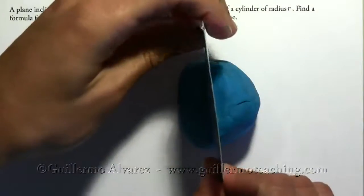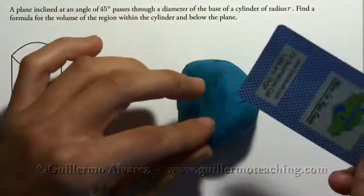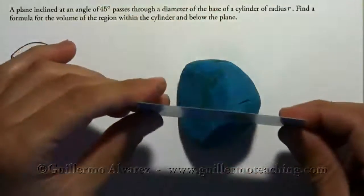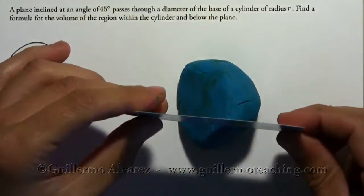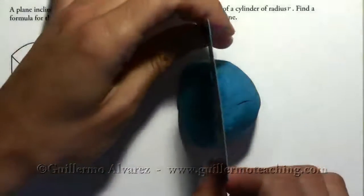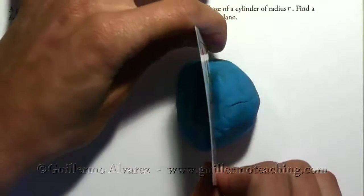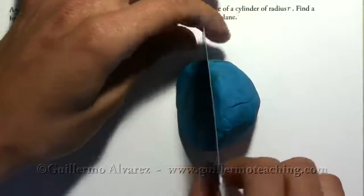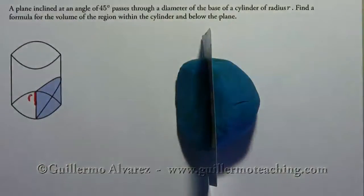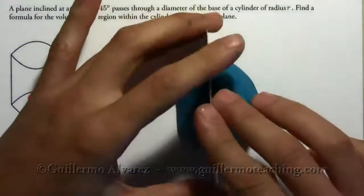So we're going to take a cross-section. Actually, there's two ways to do this one, but we're going to take, you can take a cross-section like this, which would give you triangles, but we're going to, I'm going to do this one. Later on, if you feel like trying it, and trying the cross-sections the other way and comparing, then you can do that for fun.